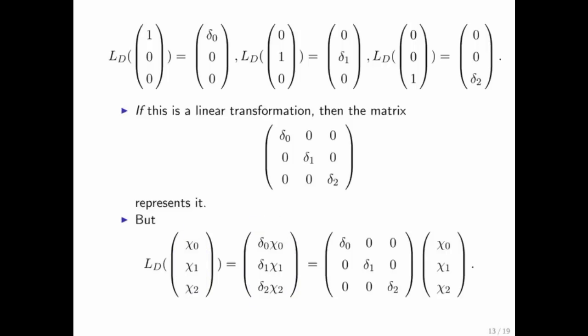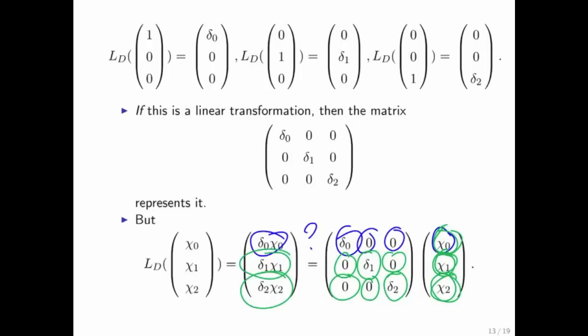The question becomes, is that the same as this matrix vector multiply? Well, this times that is this, and we multiply with zeros for the rest. So indeed, the first components are the same. 0 times that plus delta 1 times chi 1 plus 0 times chi 2 is indeed that. And 0 times chi 0 plus 0 times chi 1 plus delta 2 times chi 2 is indeed this last component right here.